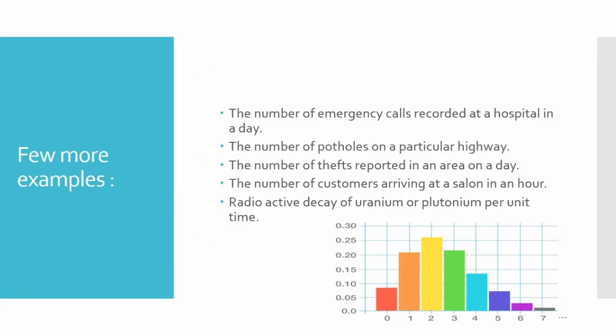Now we will see some examples that follow Poisson distribution. The number of emergency calls recorded at a hospital in a day. You can see that all conditions are being met, the events are absolutely independent. You can get one emergency call, you can get absolutely zero, or you may get a lot of emergency calls.